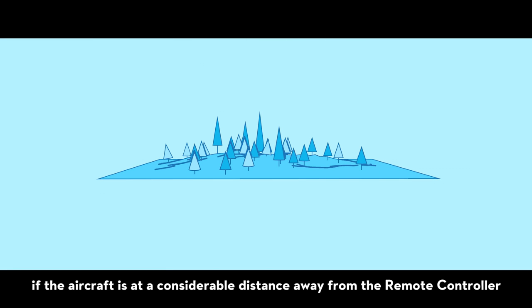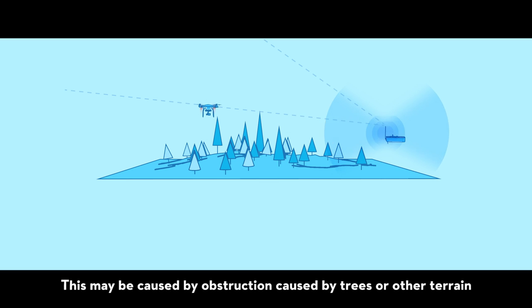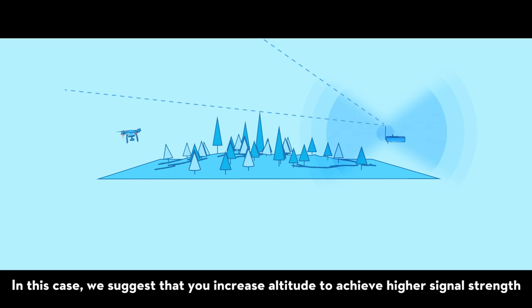You may also experience a weak signal if the aircraft is at a considerable distance away from the remote controller when flying at a low height outdoors. This may be caused by obstruction from trees or other terrain. In this case, we suggest that you increase altitude to achieve higher signal strength.